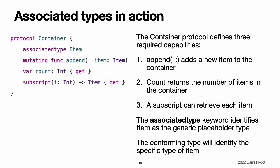Associated types in action. Here is an example of a protocol called container, which declares an associated type called item. The container protocol defines three required capabilities that any container must provide. It must be possible to add a new item to the container with an append method. It must be possible to access a count of the items in the container through a count property that returns an integer value. It must be possible to retrieve each item in the container with a subscript that takes an integer index value. This protocol does not specify how the items in the container should be stored or what type they are allowed to be. The protocol only specifies the three bits of functionality that any type must provide in order to be considered a container.